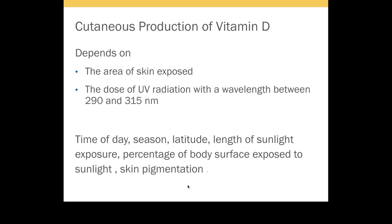The cutaneous production of vitamin D depends on the area of skin exposed and also UV radiation with a wavelength between 250 to 350 nanometers. Even with sunlight exposure, if adequate UV radiation is not received, the skin will not produce vitamin D. Factors that determine vitamin D production include: time of day, season, latitude, length of sunlight exposure, percentage of body surface area exposed, and skin pigmentation. More pigmented individuals produce less vitamin D.